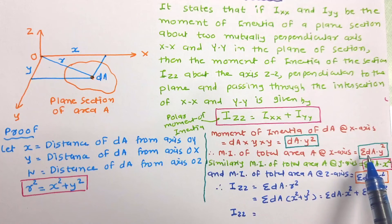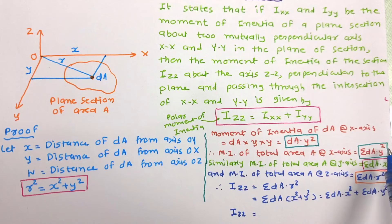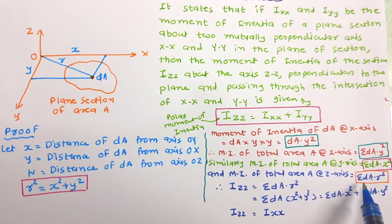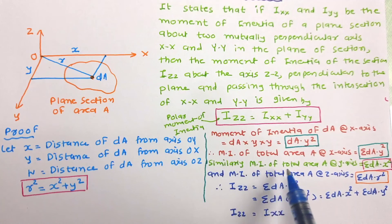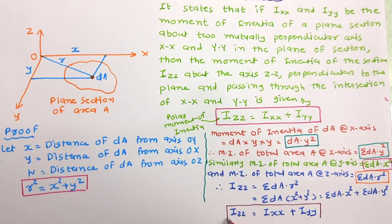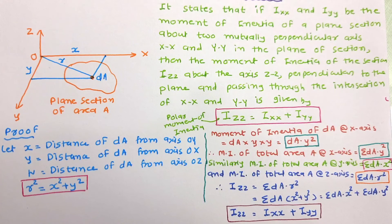From this equation, Σ(DA × Y²) is the moment of inertia of the total area about the X axis, which equals IXX, and Σ(DA × X²) is the moment of inertia of the total area about the Y axis, which equals IYY. Therefore IZZ = IXX + IYY. This is the proof of the Perpendicular Axis Theorem, and this equation will be very useful in solving problems of moment of inertia.